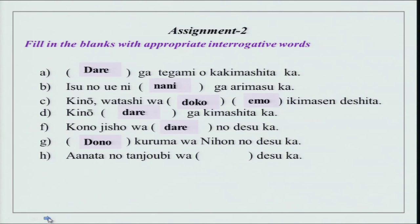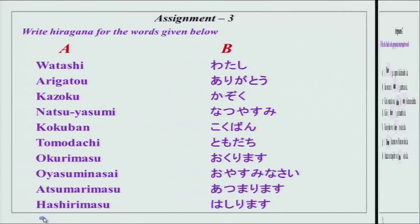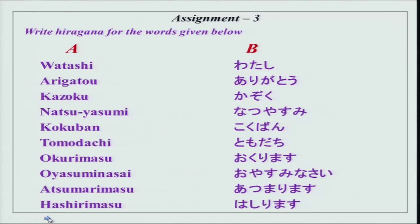Dono kuruma wa nihon no desu ka — with dono and a noun, it is a choice between two, meaning 'which one of these two.' Anata no tanjoubi wa itsu desu ka — please remember, tanjoubi is always itsu and sengappi is nan. The third exercise: write hiragana for the words given below. The hiragana is in the right column; you can check and practice your hiragana — write it and practice.